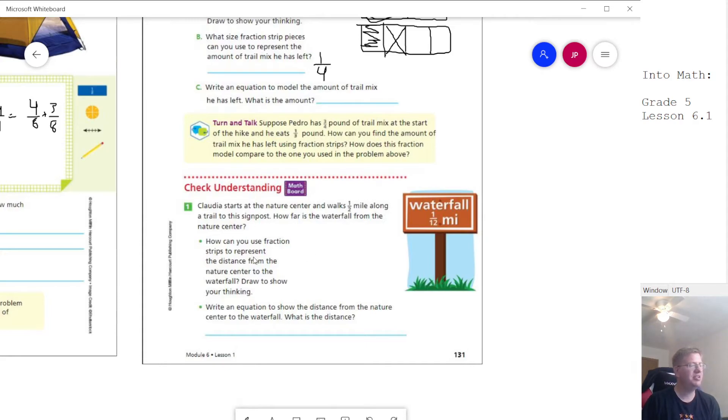And so down here, we are working with one half mile along a trail to a sign post, and we want to know how far it is from the waterfall to the nature center. So we need to go one twelfth of a mile from the sign to get to the waterfall. So we would add those two things together. And so I'm actually going to pause the video cause this one will take a little bit more time to draw and I'll be right back.